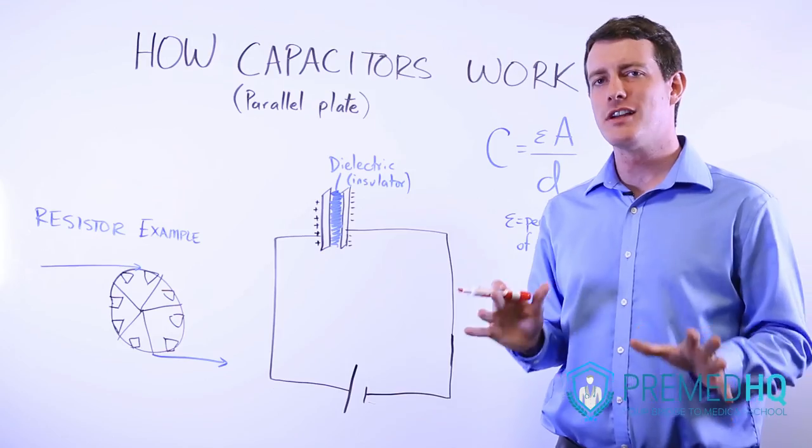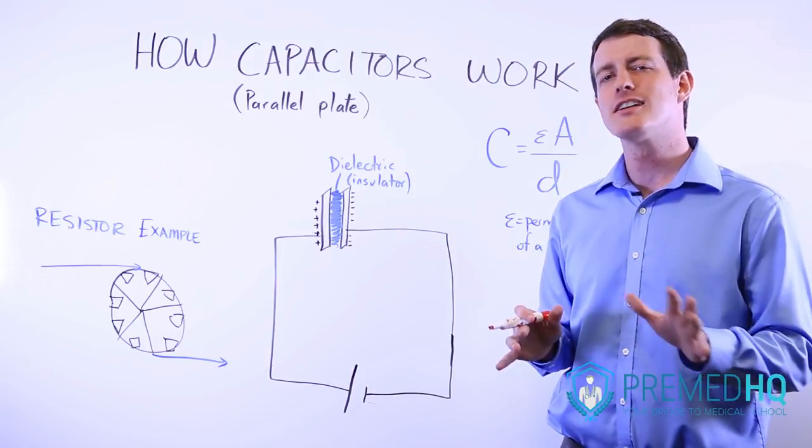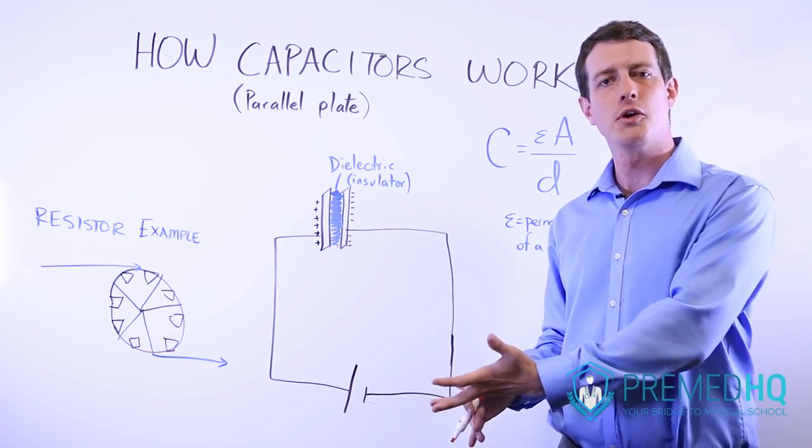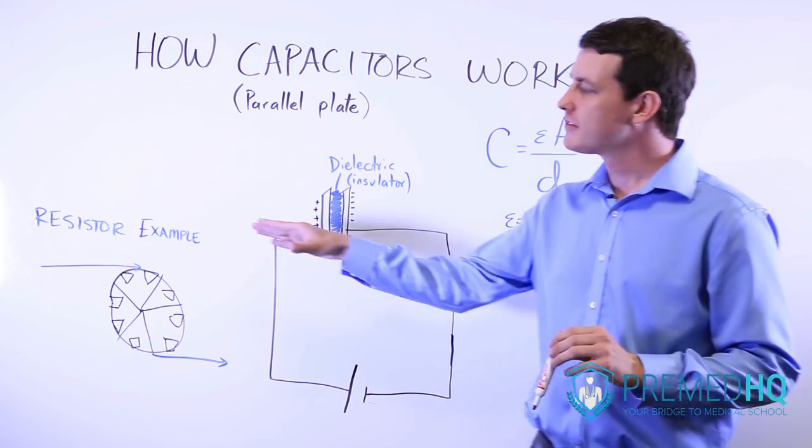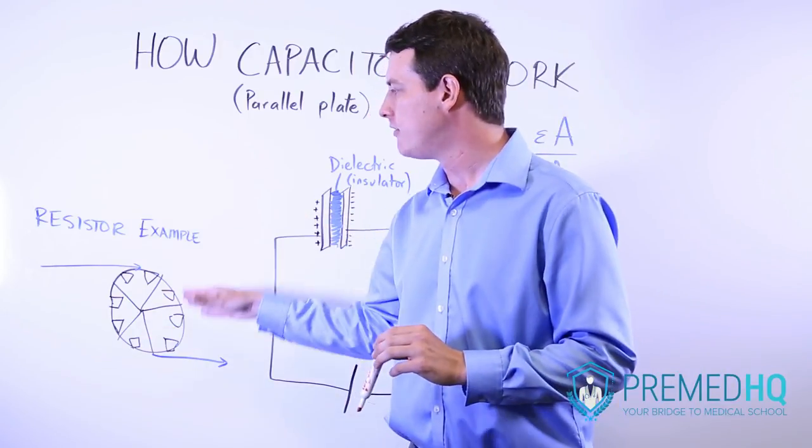This brings us to another concept that I think is very important to discuss. Current doesn't change when it encounters a resistor or a capacitor. A resistor gives us a straightforward way to think of this, and we can use the example of a water wheel.